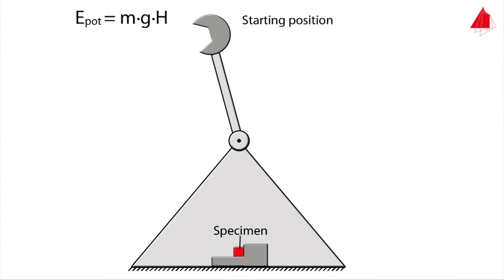Here is the main principle of the measurement. In its starting position the pendulum only has potential energy. It is given by mass of the hammer m times gravitational acceleration g times starting height capital H.